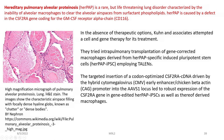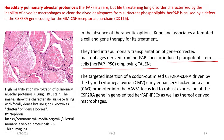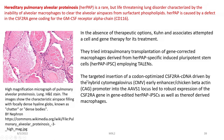High magnification micrographs of pulmonary alveolar proteinosis show characteristic airspace filling with focally dense hyaline globules known as chatter or dense bodies. In the absence of therapeutic options, Kuhn and associates attempted a cell and gene therapy for treatment, using intrapulmonary transplantation of gene-corrected macrophages derived from HAARPAP-specific induced pluripotent stem cells employing TALENs. The targeted insertion of a codon-optimized CSF2RA cDNA driven by the hybrid CMV early enhancer/chicken beta-actin CAG promoter into the AAVS1 locus led to robust expression of the CSF2RA gene in gene-edited HAARPAP iPSCs and their derived macrophages.